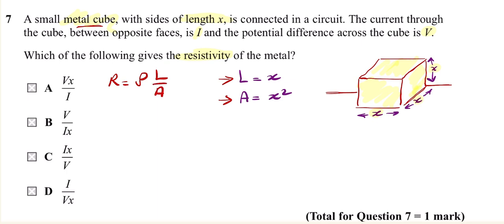So ρ equals, for resistivity, it's R A over l. So ρ equals R x squared for the cross-sectional area divided by x for the length. Then cancel out the square with the x, so ρ equals R x.